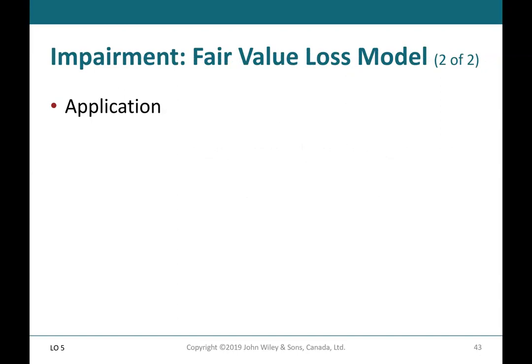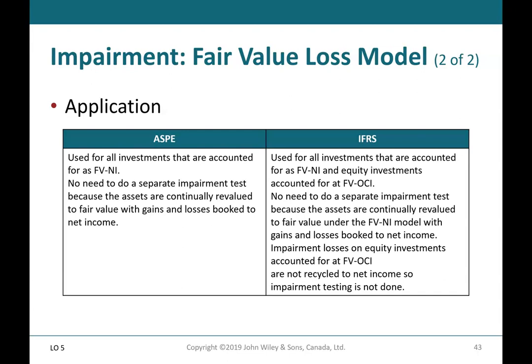Impairment Fair Value Loss Model — ASPE (2 of 2): used for all investments accounted for as fair value through net income. No separate impairment test is needed because the assets are continually revalued to fair value under the fair value through net income model, with gains and losses booked to net income. Impairment losses on equity investments accounted for at fair value through OCI are not recycled to net income, so impairment testing is not done.